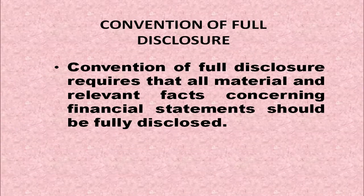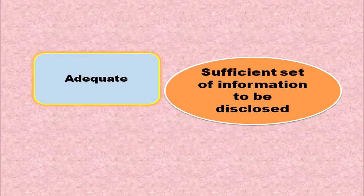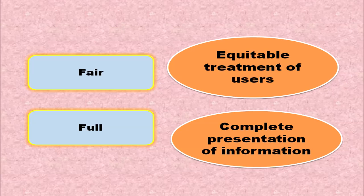The next convention is the Convention of Full Disclosure. It requires that all material and relevant facts concerning financial statements should be fully disclosed. Full disclosure means there should be full, fair, and adequate disclosure of accounting information. Adequate means a sufficient set of information; fair means equitable treatment of users; and full means complete presentation of the information.